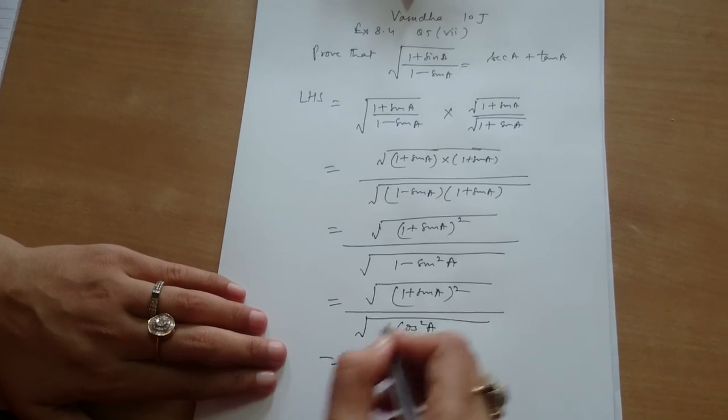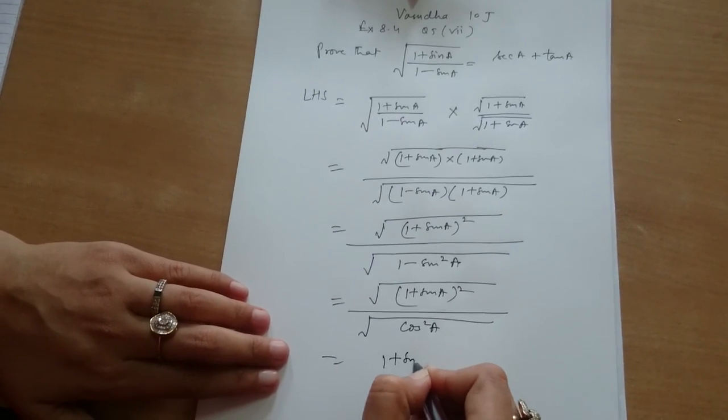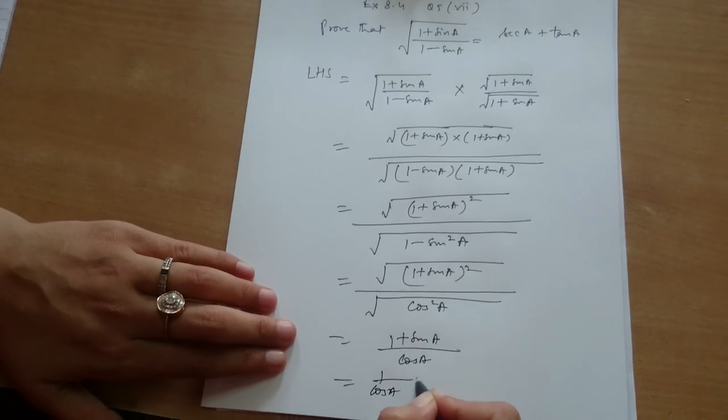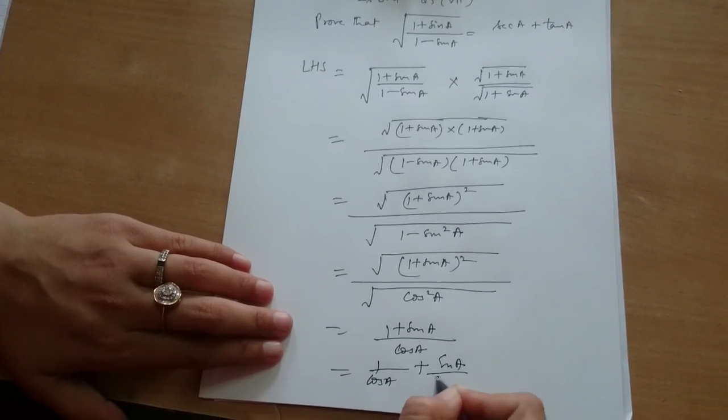I can write it as 1 plus sin A divided by cos A, which is equal to 1 by cos A plus sin A by cos A. What is 1 by cos A?